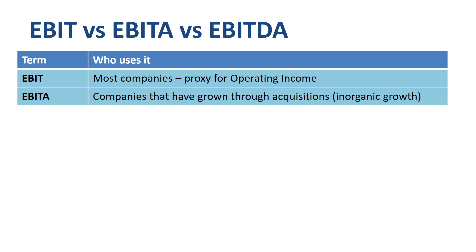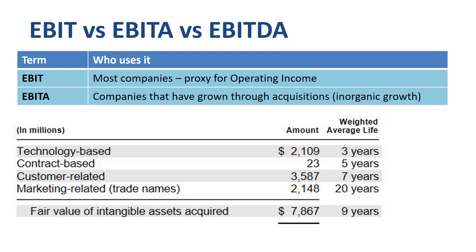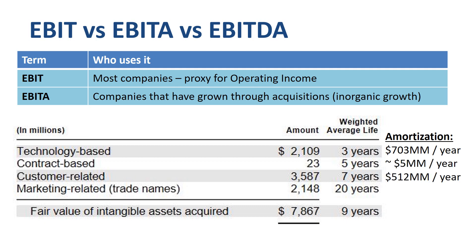Some companies find the non-GAAP term EBIT-A a more meaningful financial metric to report on current financial performance. If a company has done significant acquisitions in the past, then the current income statement may have a significant charge related to amortization of acquired intangible assets. An example of acquired intangible assets can be trade names. If these are judged to have a definite rather than an indefinite life, then an annual amortization charge is booked. Reporting on EBIT-A rather than EBIT excludes this amortization charge.